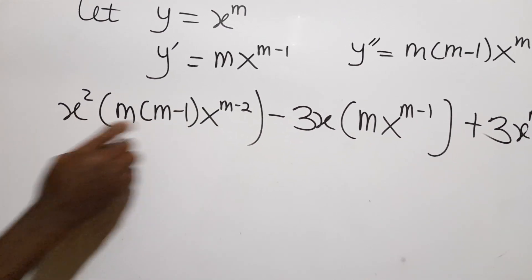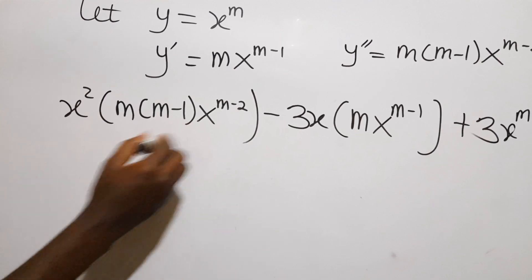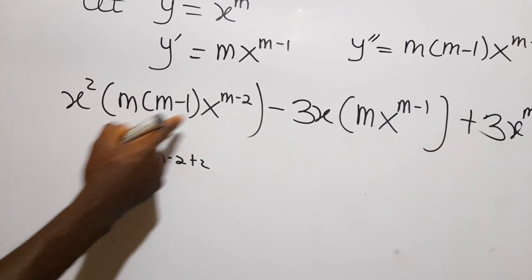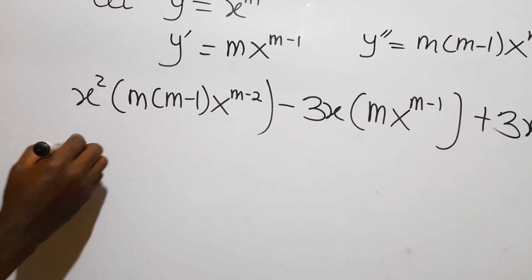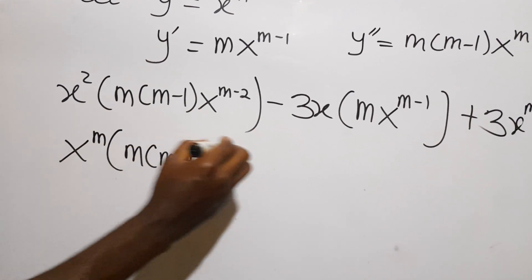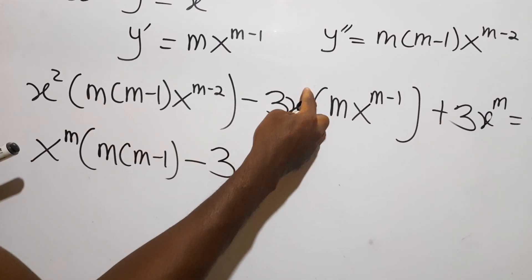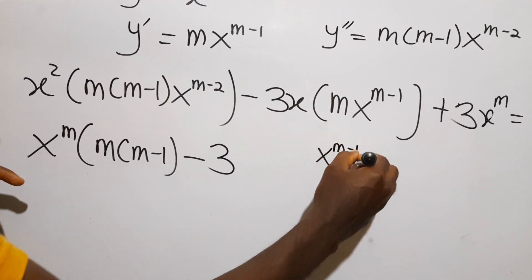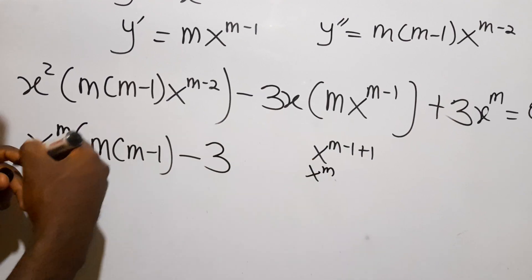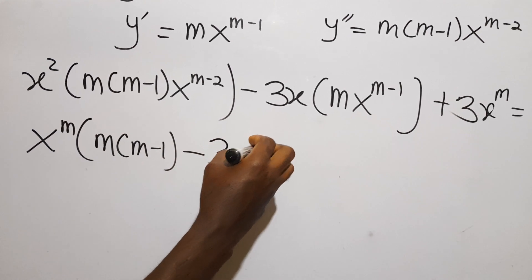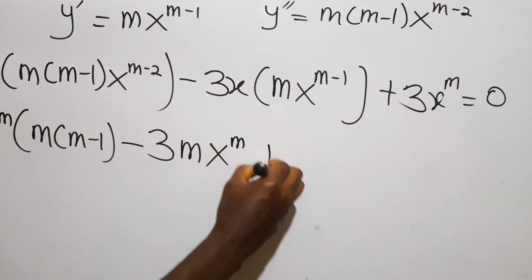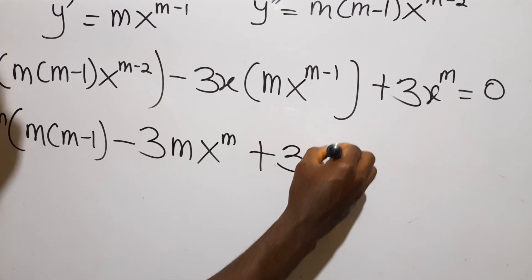The bases are the same so we add the exponents using index laws. x squared times x^(m−2) gives x^m. Similarly, x times x^(m−1) gives x^m. So we have m(m−1)·x^m minus 3m·x^m plus 3·x^m equals 0.